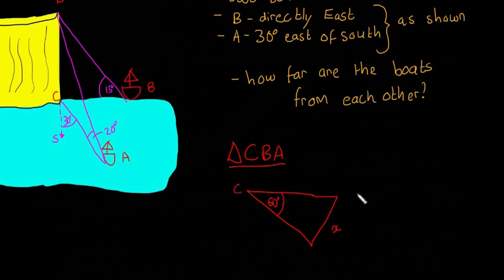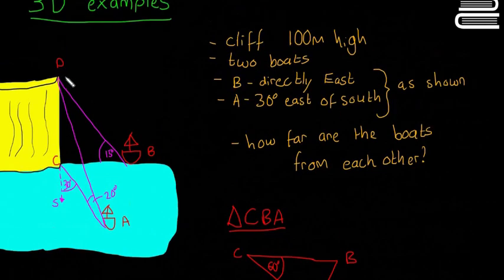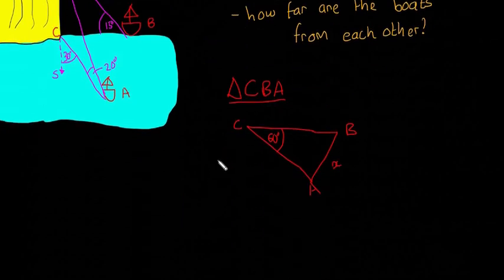I'll just label it as well. C, B, and A. So we don't know how far A is from the cliff, we don't know how far B is from the cliff, and so we're going to need to find these things out. So I'm going to leave that for now. I'm going to draw another triangle. We'll draw this one here, DCB, how far boat B is from the cliff.